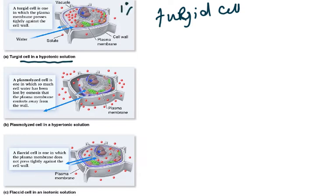In a hypotonic solution, the outside is 1% and inside is 2%, so water has moved in and the cell membrane is now pushing outward. The cell sap concentration inside the tonoplast is higher than outside, so water moves in from a higher water potential to a lower water potential.